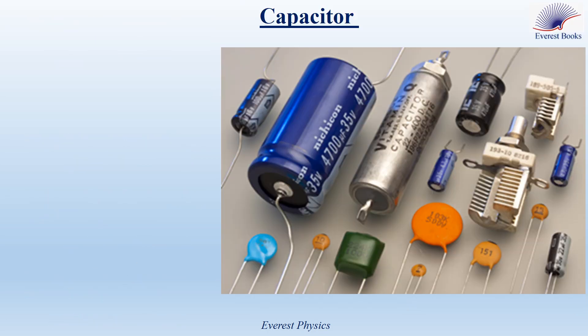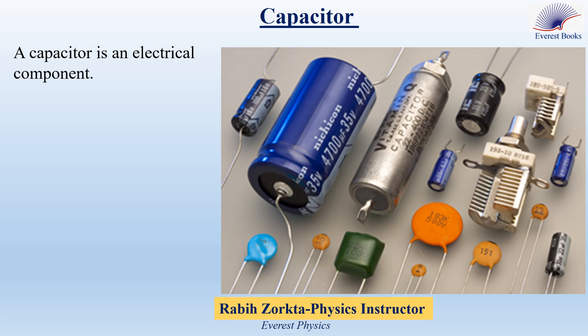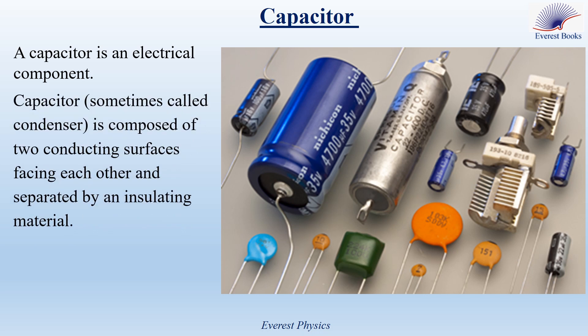What is a capacitor? A capacitor is an electrical component used in many electronic devices like computers, radios, telephones, TV sets, etc. A capacitor, sometimes called a condenser, is composed of two conducting surfaces or plates facing each other and separated by an insulating material.